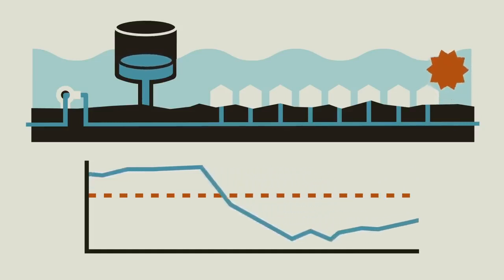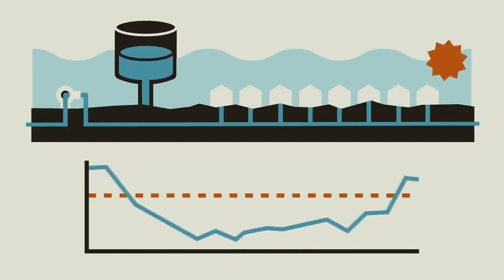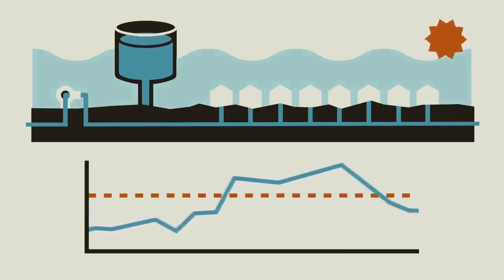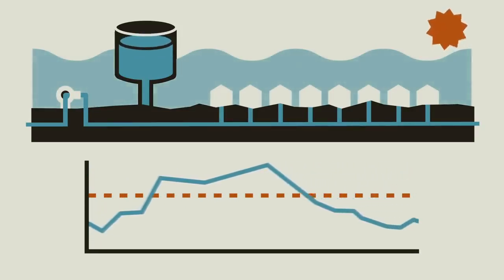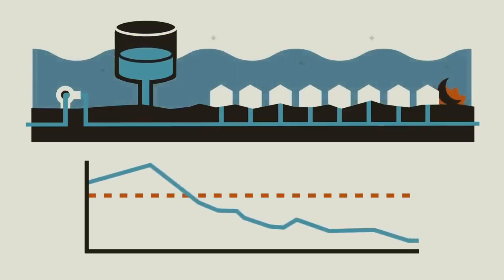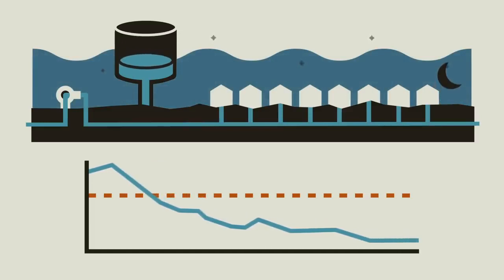As people start their day, demand again drops below average, but the pump keeps running and the extra flow goes into the tank. Demand again begins to spike as residents of the city start cooking dinner, taking baths, and watering the plants. All this extra water use drains the tank again before most people go to bed and the cycle starts again.